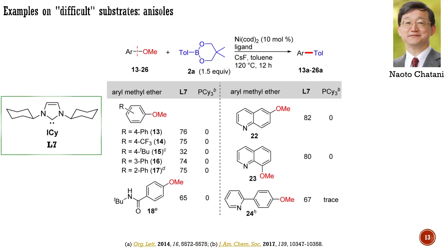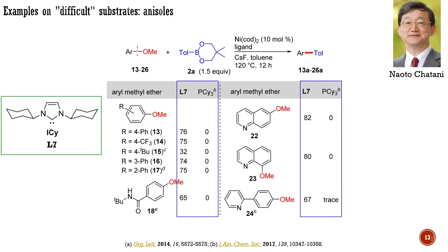A few years later, they could demonstrate that the limitation of predominantly using fused arenes can be overcome by the application of NHC ligands. Here, among others, you can see the comparison of the results for the reactions performed with the NHC ligand L7 with those obtained for tricyclohexylphosphine. The catalysts based on phosphine ligands were typically not active for substrates other than fused arenes. Computational studies on the mechanism suggest that the NHC ligand makes the nickel sufficiently electron-rich, thus allowing the cleavage of the carbon-oxygen bond in simple anisoles.